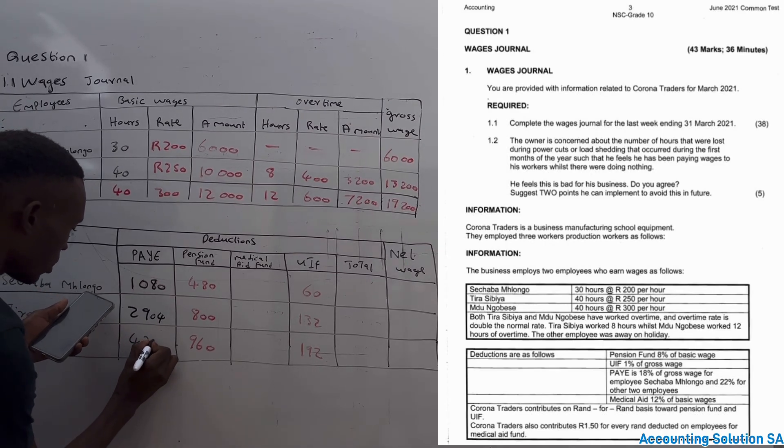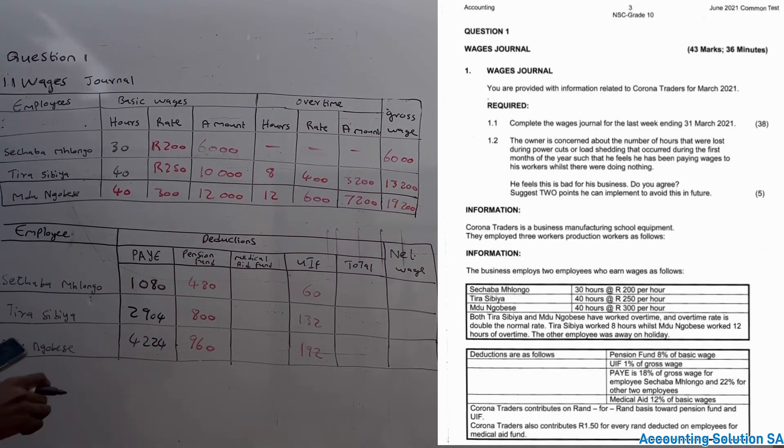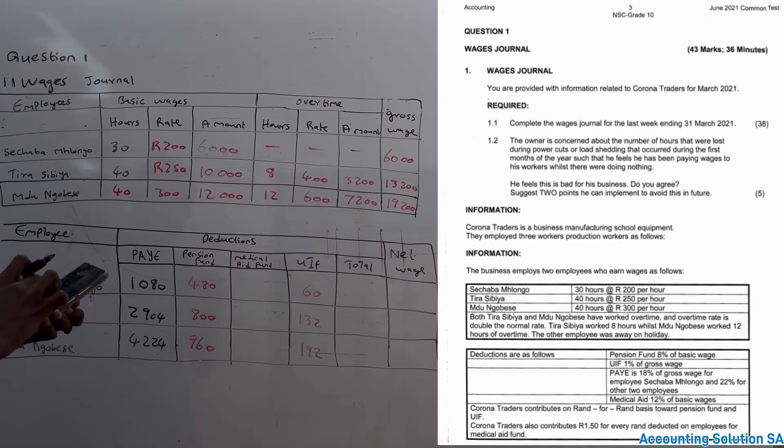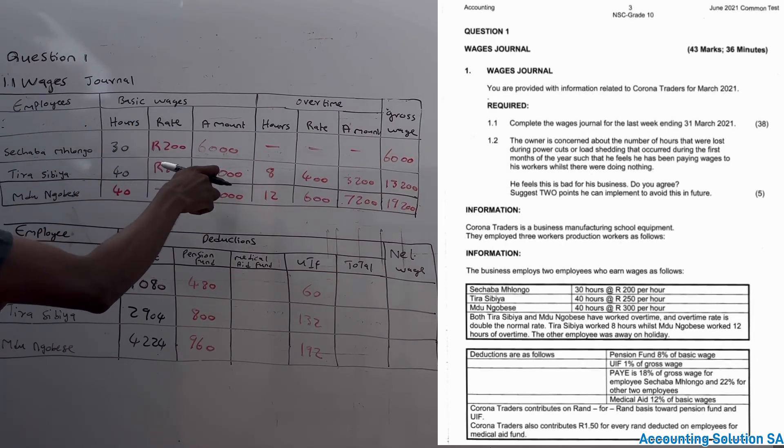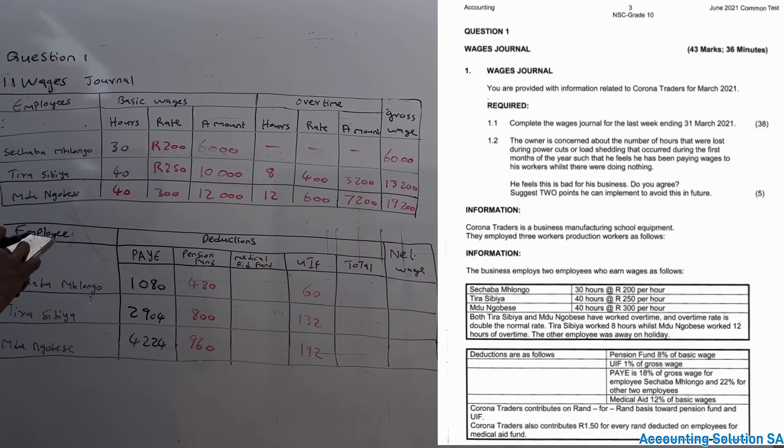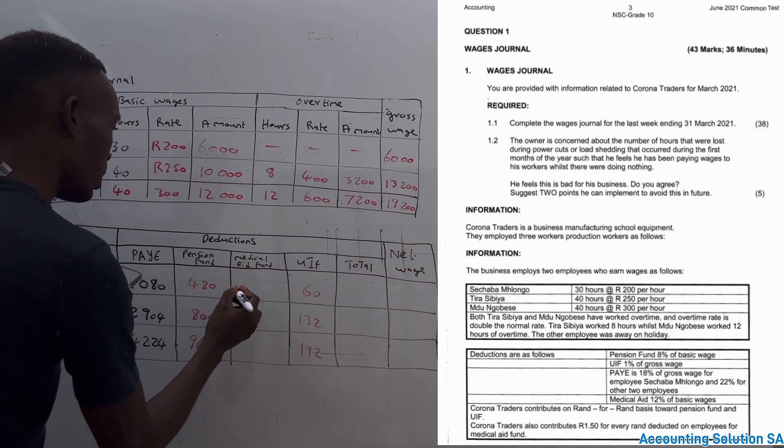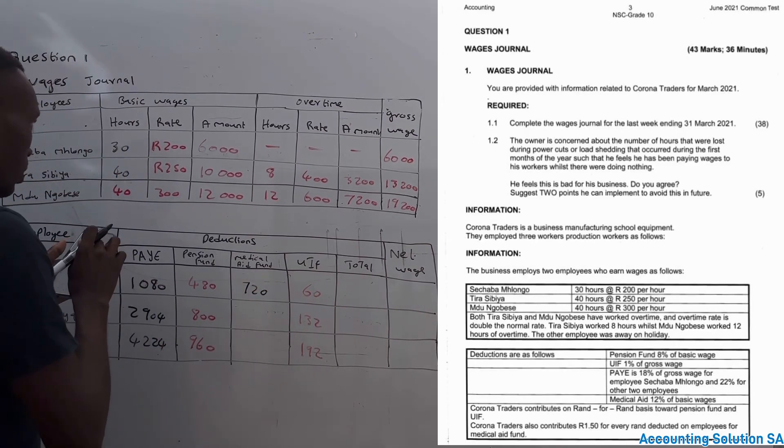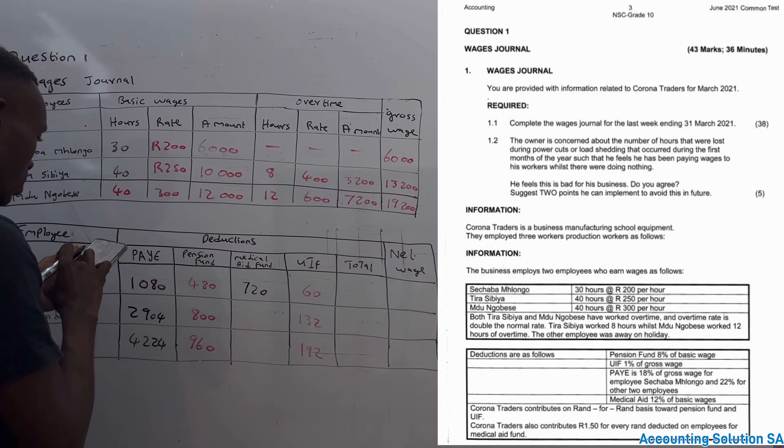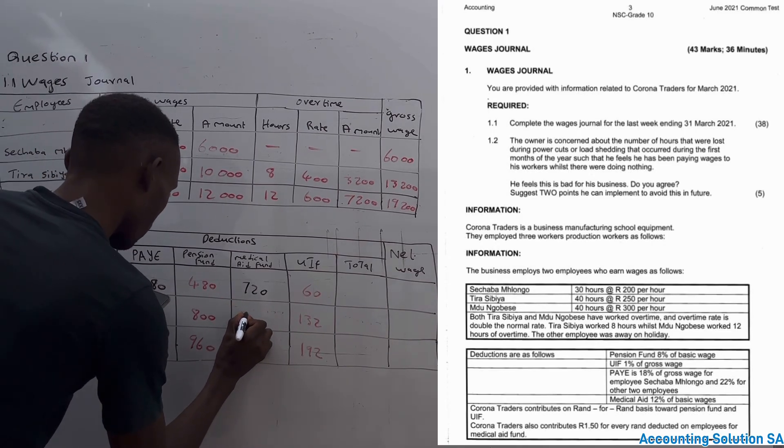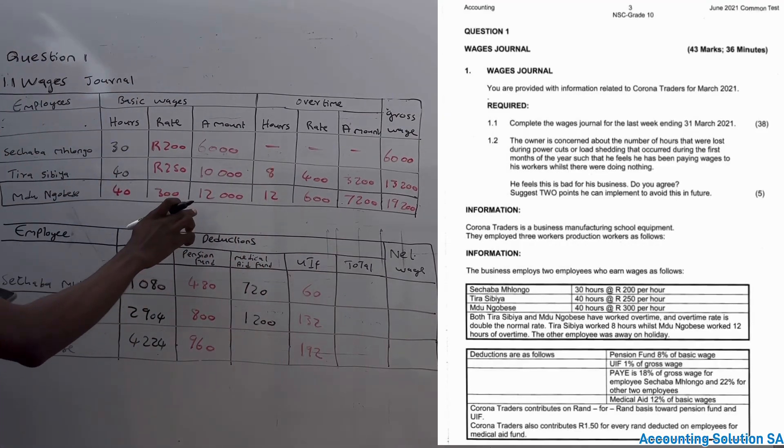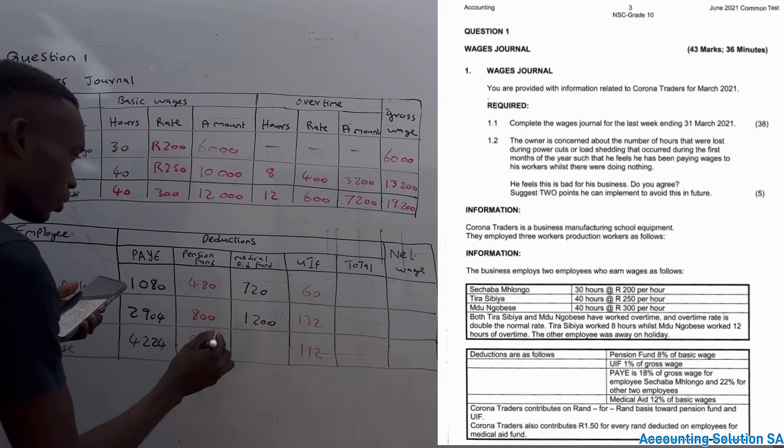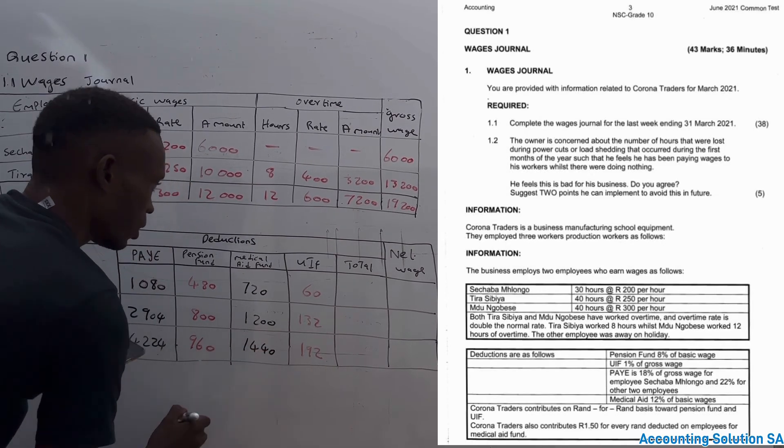Okay, then also the other employee is 22%, which is going to be 19,200, which is going to give us R4,224. Now let's go to medical aid. Medical aid, they say, is 12% of basic. 12% of this. 12% of 6,000: he's going to pay a medical aid of R720. And the other one who is earning 10,000 is going to pay R1,200. And the one earning 12,000 is going to pay R1,440, just like that.